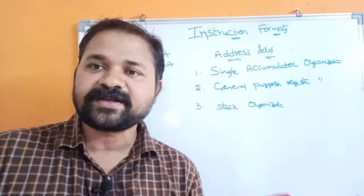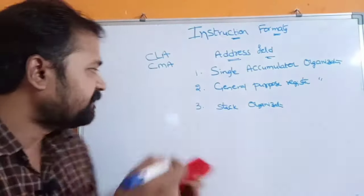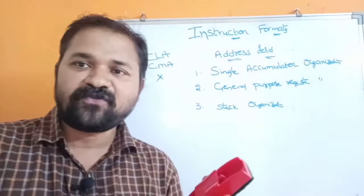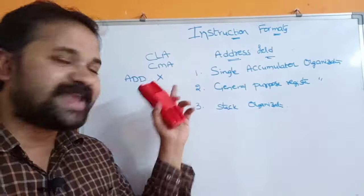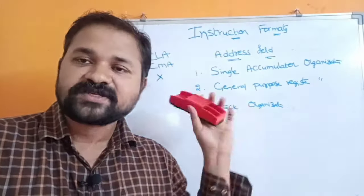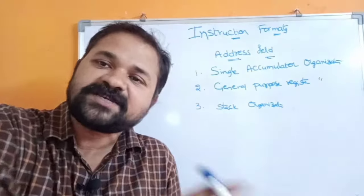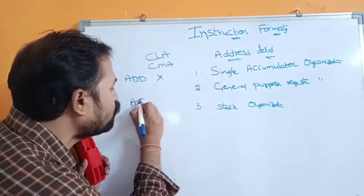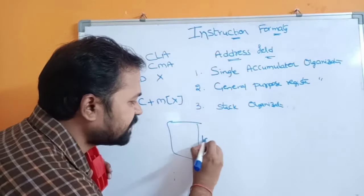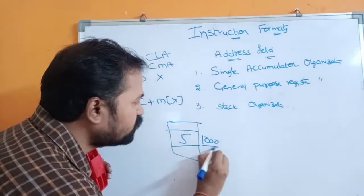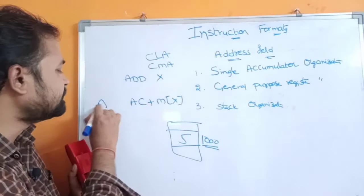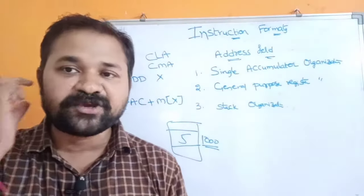When CMA is executed, the content of the accumulator will be complemented. For example, ADD X — we know we perform ADD on two numbers, but here we have only X. The second operand resides in the accumulator. X is a memory location. When this instruction is executed, the content of the accumulator will be added to the memory operand at address X, and the result is transferred to the accumulator. For example, if X is 1000 and M[1000] is 5, then the accumulator content is added to 5 and the result is stored in the accumulator.